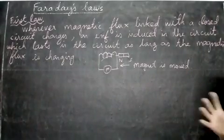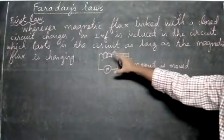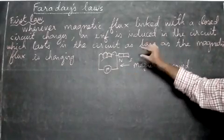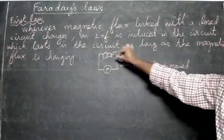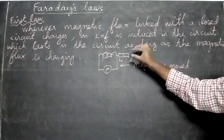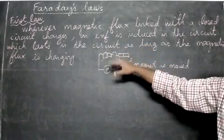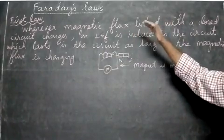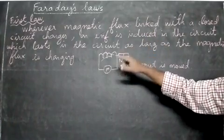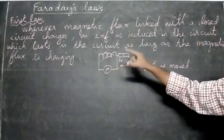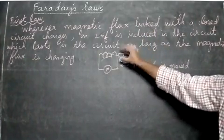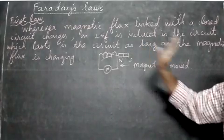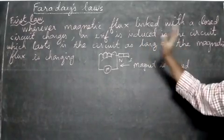So what happens is: you take a circuit here. We are taking the coil and the galvanometer and we move the magnet. When you move the magnet, the magnetic flux will change. The current will be there and the EMF is there — but only when the magnetic flux is changing. If you stop moving the magnet, current is not produced. That's what the first law says.